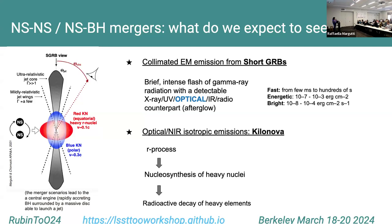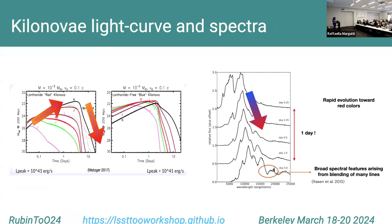The short gamma-ray burst is a collimated electromagnetic emission. When the jet collides with the interstellar medium, we can have electromagnetic emission from X-ray to radio band, called the afterglow. This is one of the two emissions we can have during a neutron star or neutron star–black hole merger. The other emission is the isotropic kilonova emission, powered by the radioactive decay of elements synthesized by the r-process — a very rapid neutron capture process requiring very high temperature and density.